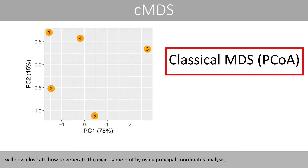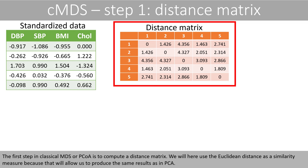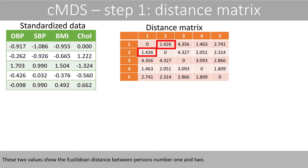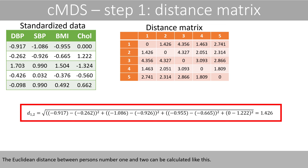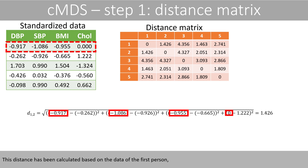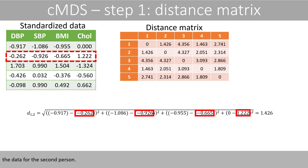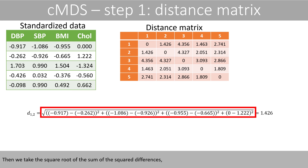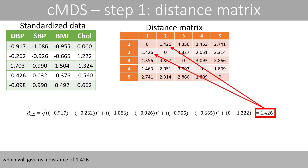I will now illustrate how to generate the exact same plot by using principal coordinates analysis. Using our previous standardized data, the first step in classical multidimensional scaling, or PCoA, is to compute a distance matrix. We will use the Euclidean distance as a similarity measure, because that will allow us to produce the same results as in PCA. The Euclidean distance between persons number 1 and 2 can be calculated by taking the square root of the sum of the squared differences, which gives us a distance of 1.426.